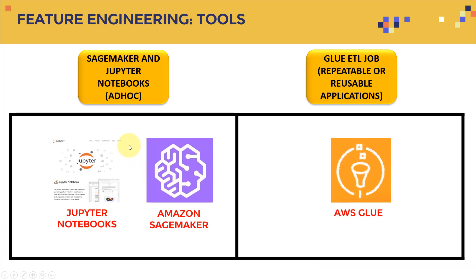What tools should you use for feature engineering? You can go two routes. First, using Jupyter Notebooks with Amazon SageMaker for ad hoc analysis — you can create your own code, as covered in the previous section. On the other hand, you can use AWS Glue, which we covered before for ETL jobs, to do transformations. Using Glue gives you a repeatable and reusable application, whereas SageMaker/Jupyter Notebooks are more for one-off, ad hoc analysis.